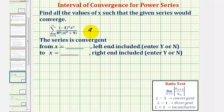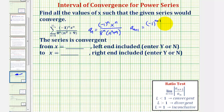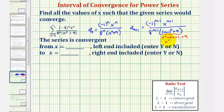Notice that a_n would be equal to negative one to the power of n times x to the power of n, divided by eight to the power of n times the quantity n squared plus nine. Therefore, a_{n+1} would be equal to negative one to the power of n plus one, times x to the power of n plus one, divided by eight to the power of n plus one times the quantity n plus one squared plus nine, which multiplies out to n squared plus two n plus ten.